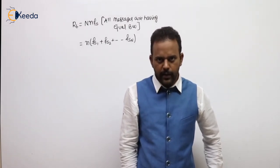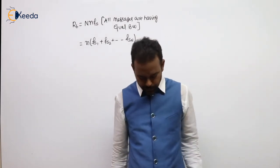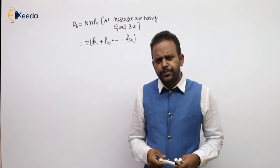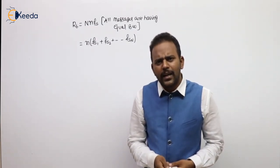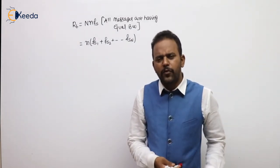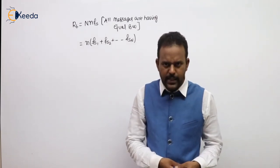If the messages have unequal bandwidth, then the bit rate formula changes to: RB = n × (Fs1 + Fs2 + ... + FsN). Do not multiply again with capital N — adding N terms or multiplying with N are the same only when all Fs values are equal.